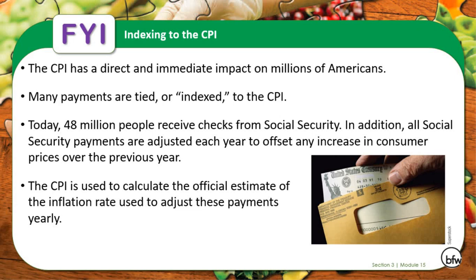The CPI has a direct and immediate impact upon millions of Americans. Many payments are tied or indexed to the CPI. Today, 48 million people receive checks from Social Security. All Social Security payments are adjusted each year to offset any increase in consumer prices from the previous year, and the CPI is what's used to calculate that. So this number does have a huge impact on people's daily lives. If you have any questions, write them down and I'll answer them in the next class.